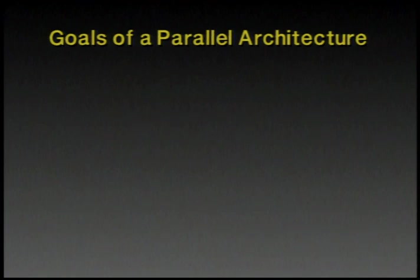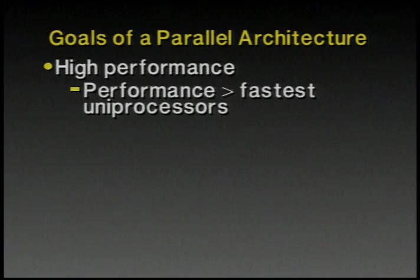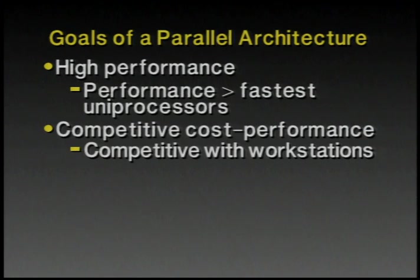Before starting, let's discuss the goals in designing a parallel machine. Probably the first goal is the obvious one: one would like high performance out of a parallel machine — faster than available uniprocessors. The second goal, which we think is quite important, is that the cost performance of a multiprocessor be competitive with the cost performance of workstations that use the microprocessor technology available.